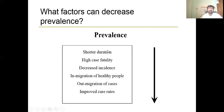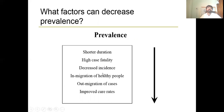Factors that decrease prevalence include: a disease with a shorter duration, where the majority of people recover quickly; high case fatality, where people are dying earlier; decreased incidence, meaning fewer new cases added; in-migration of healthy people into the population; out-migration of cases, where diseased people leave the high-prevalence population; and improved cure rates when treatment modalities are available.